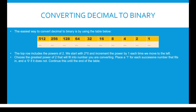Converting decimal to binary: the top row includes the powers of 2. We start with 2 to the power 0 and increment the power by 1 every time we move to the left. So 2 to the power 0 is equal to 1, 2 to the power 1 is equal to 2, 2 to the power 2 is equal to 4, and so on. Choose the greatest power of 2 that will fit into the number you are converting. Place a 1 for each successive number that fits in and a 0 if it does not. Continue this until the end of the table.